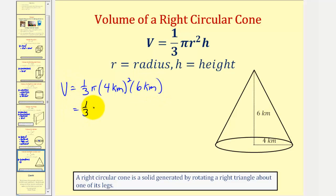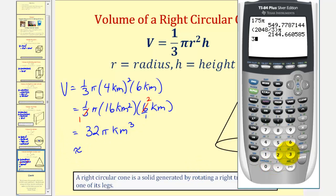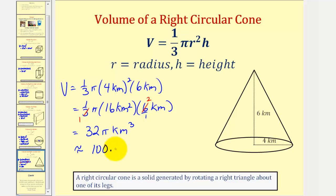So this would be one-third pi times 16 kilometers squared times six kilometers. Notice the six and the three do simplify — there is one three in three and two threes in six. Since 16 times two is 32, we have 32 pi kilometers cubed. Let's get our decimal approximation: 32 pi is approximately 100.53. Therefore, the approximate volume would be 100.53 cubic kilometers.